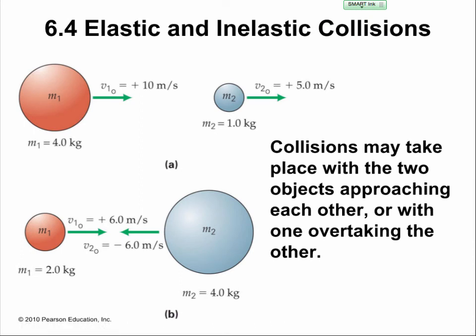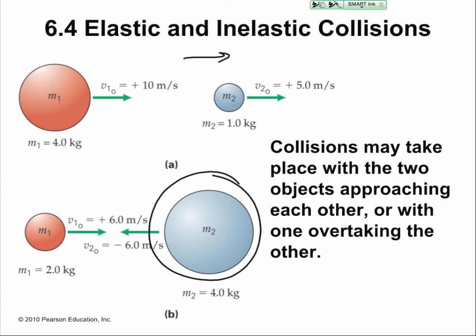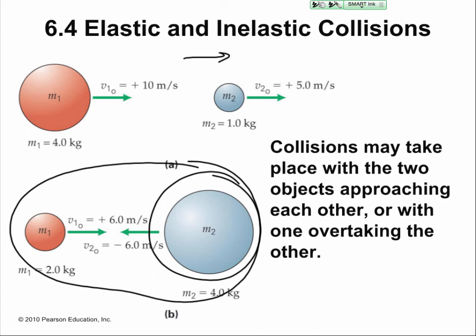Collisions take place in two scenarios: two objects approaching each other, or one overtaking the other. When two objects approach each other and collide, the overall velocity will be positive — there may be a transfer of velocity to the small ball, and both will be moving to the right. In the second scenario, two objects have equal velocities but M2 is twice as massive as M1 (M1 = 2 kg, M2 = 4 kg), so the more massive one overtakes and both end up having velocity in the negative direction.